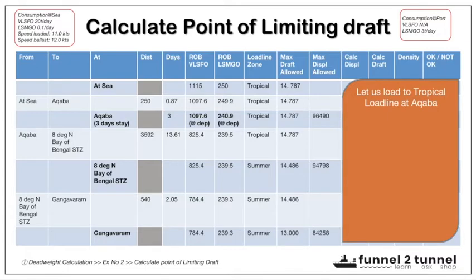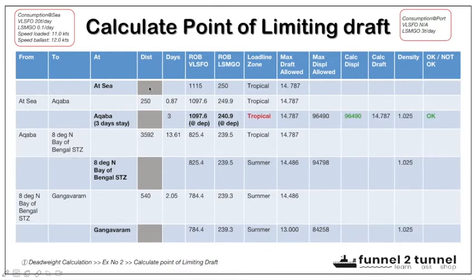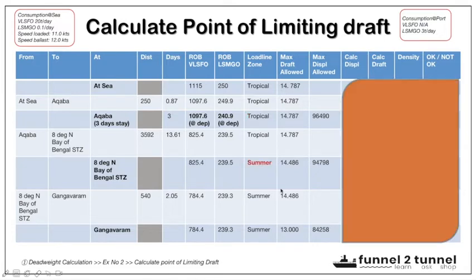Assume the ship is at Akaba and we load to the tropical load line. The displacement is 96,490 tons; subtracting the light ship gives dead weight, and subtracting departure ROBs at Akaba — including fresh water, pumpable ballast, slop, sewage, constants, and a sag allowance of 200 tons — the cargo which can be loaded is 81,651 tons. On departure from Akaba we are complying with load line requirements, so the condition is marked OK.